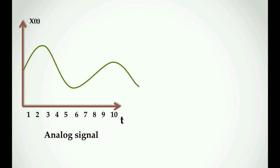So we can see this analog signal is a continuous signal — that means this signal is continuous with no discontinuity. To convert to a discrete signal, we take the analog signal and perform a conversion process by making the time axis discrete. This process is called sampling. We will discuss sampling in one lecture.